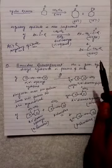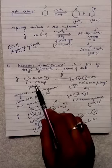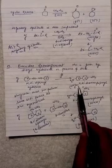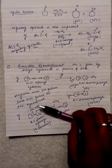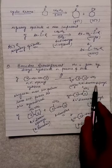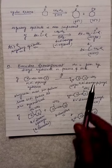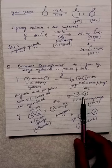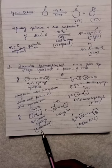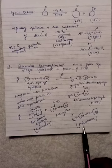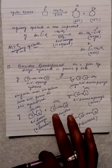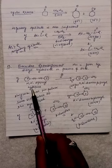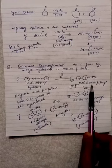Now we come to the benzidine rearrangement. In this reaction, N,N'-diphenylhydrazine reacts with acid to give a variety of products. The major product is always 4,4'-diaminobiphenyl. Along with this major product, we also get a minor product, 2,4'-diaminobiphenyl. Several byproducts are also synthesized, including orthobenzidine, orthosemidine, and parasemidine. However, the major product remains 4,4'-diaminobiphenyl.